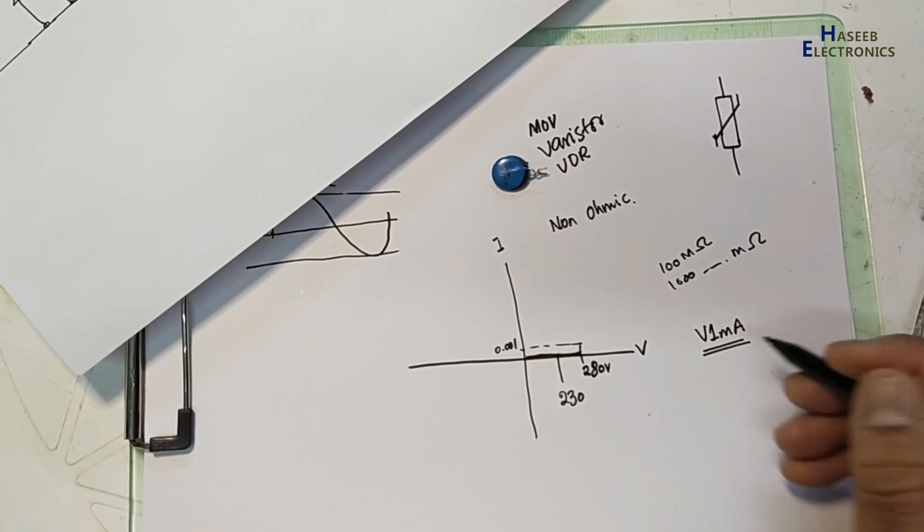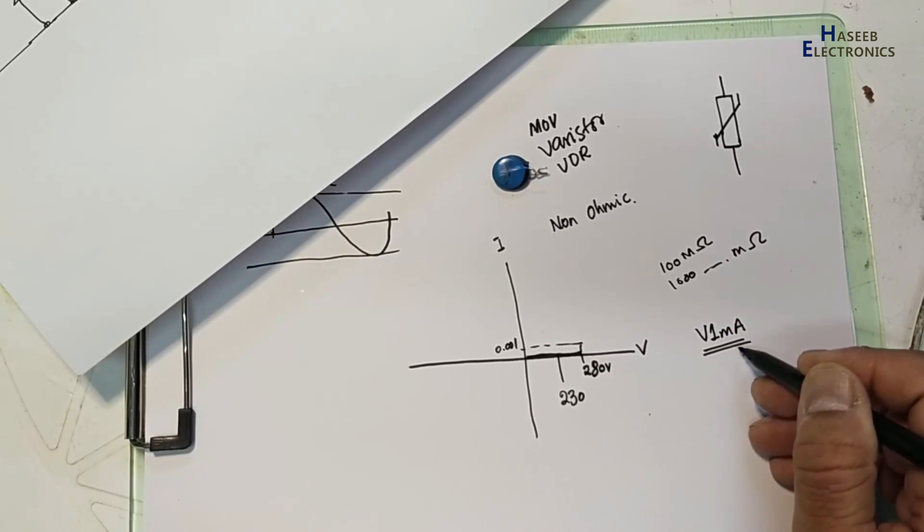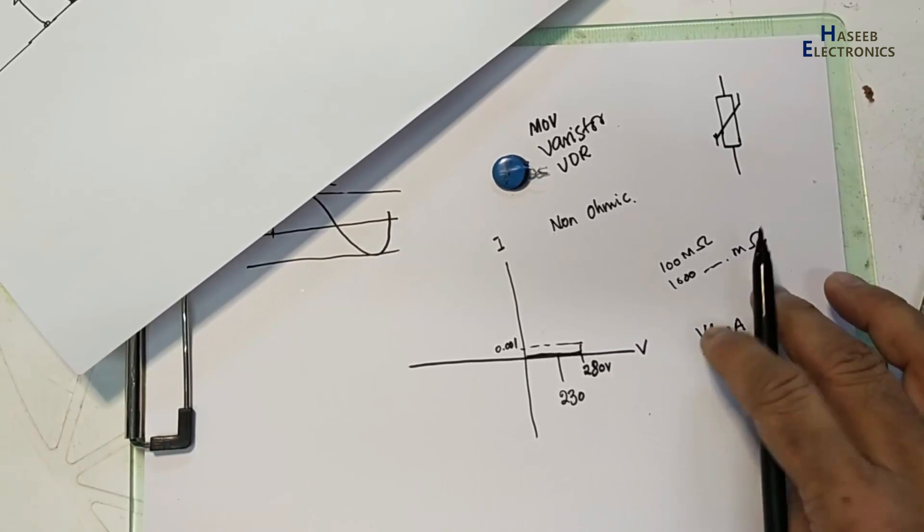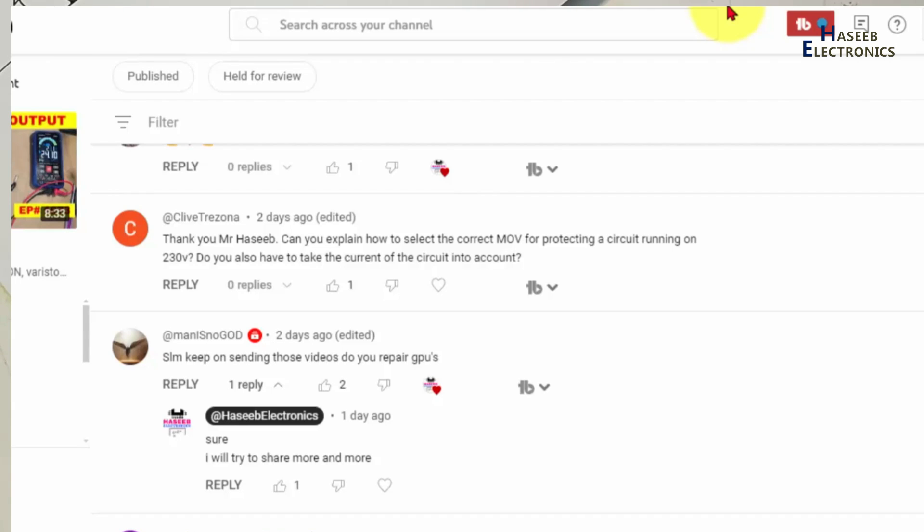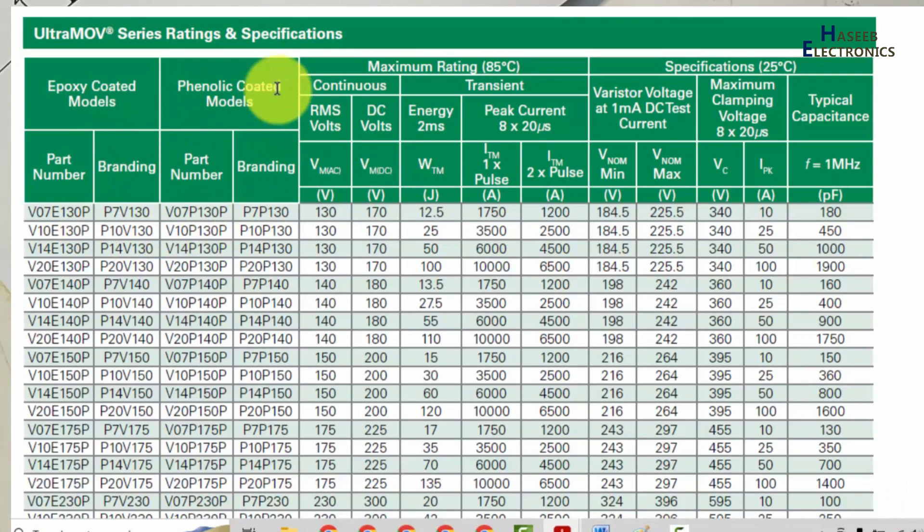Let's see the datasheet. Here are part numbers and branding. First, RMS voltage 130 volt, 140, 230 volt - we will see this one. These are working voltages 230 volt to 300 volts. Then V nominal 324 volts, I will write 324 volt.